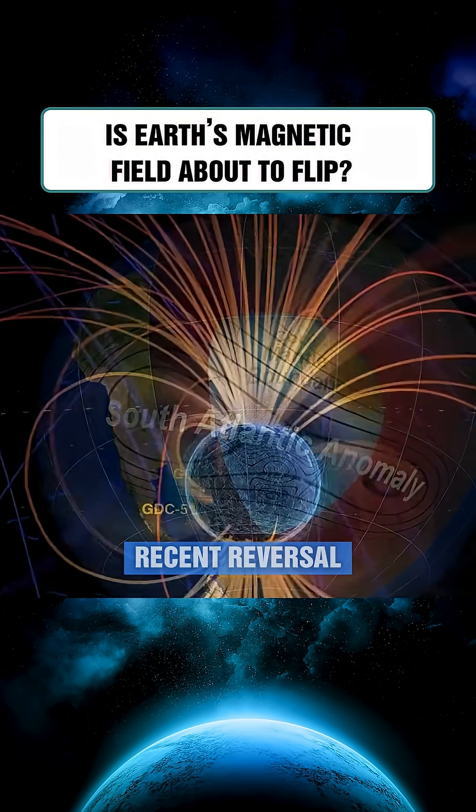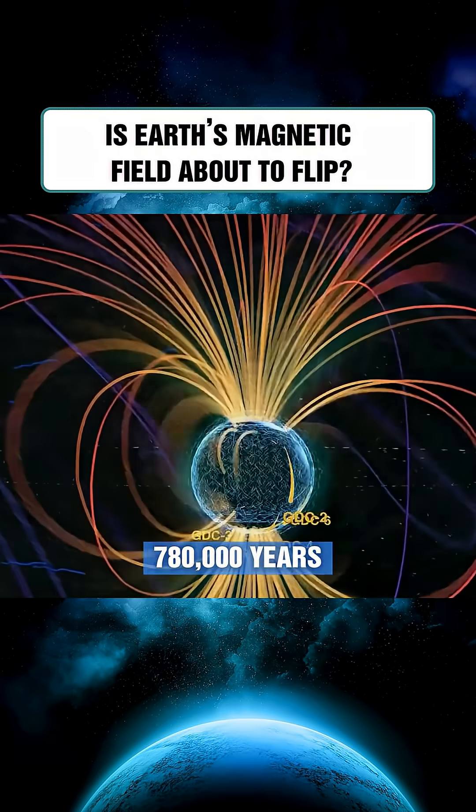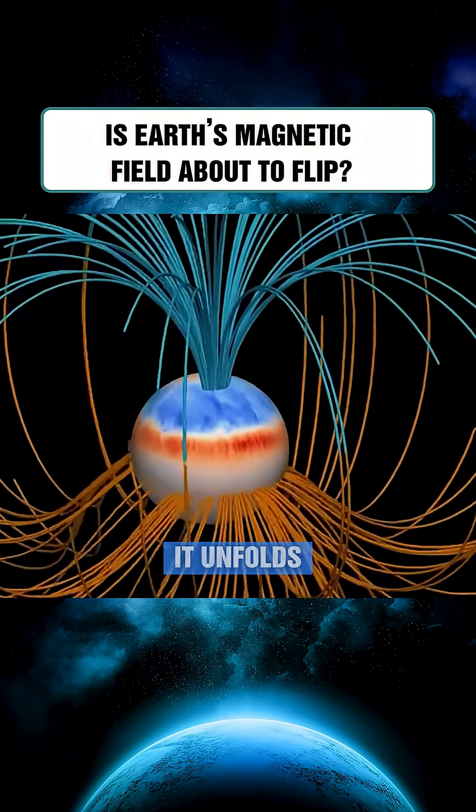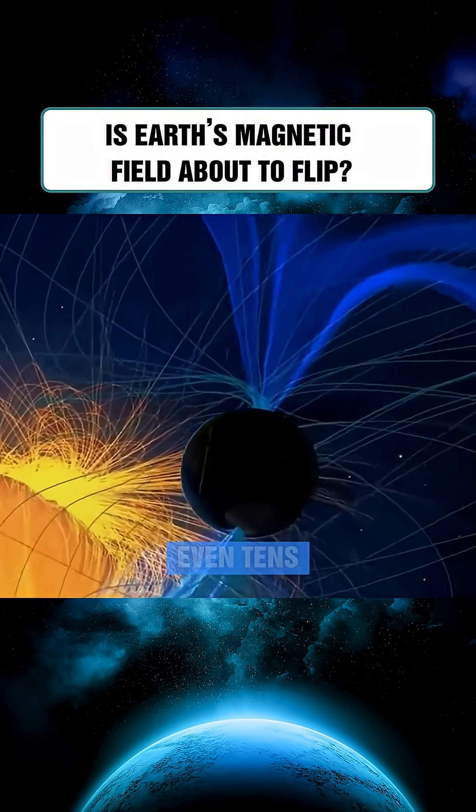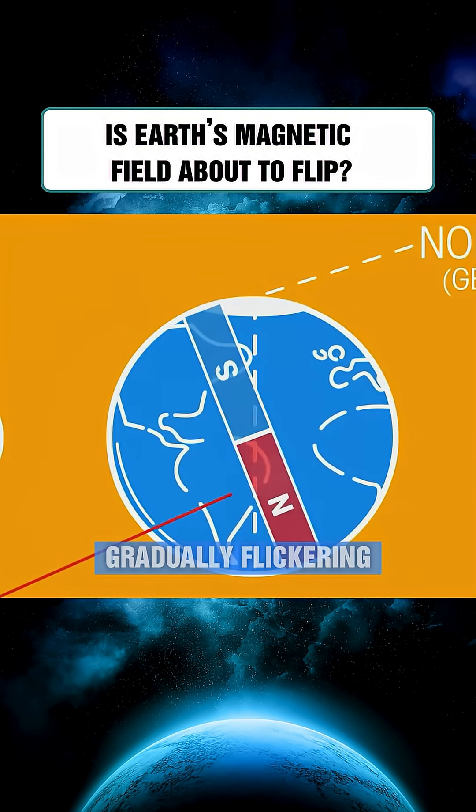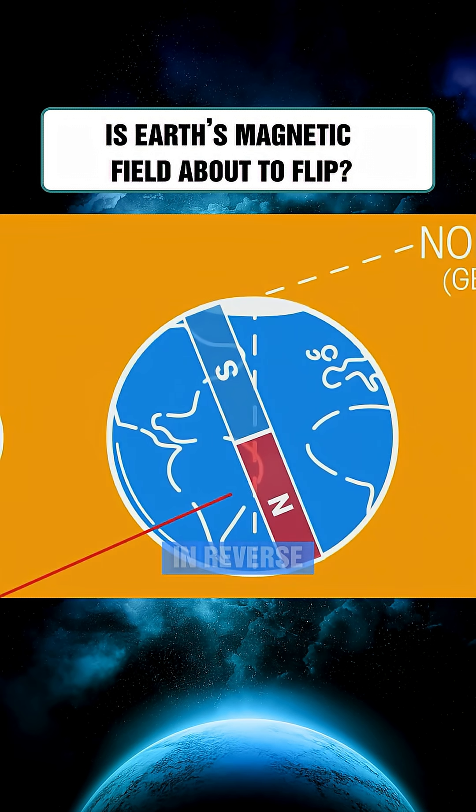The most recent reversal happened approximately 780,000 years ago. However, this process doesn't occur overnight. It unfolds slowly over centuries, even tens of thousands of years, like a dim light gradually flickering and then glowing again in reverse.